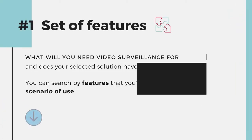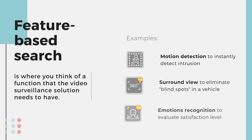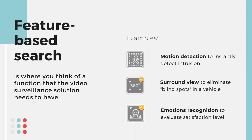The first thing you should take a look at is the set of features. Ask yourself what will you need video surveillance for and does your selected solution have it? You can search by features that you'd like to have or by scenario of use. The feature-based search is where you think of a function that the video surveillance solution needs to have — for example, a motion detector, the surround view feature, or emotions recognition.